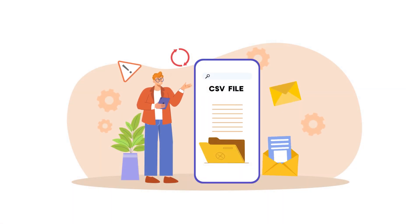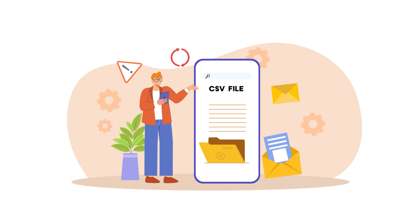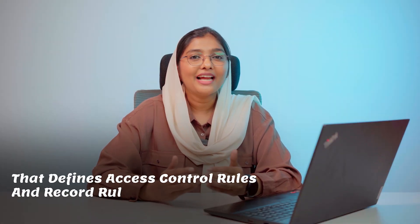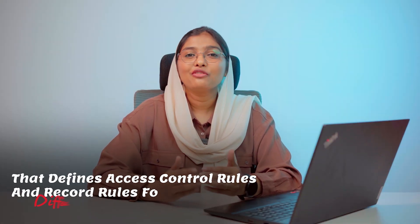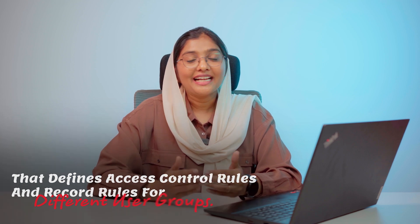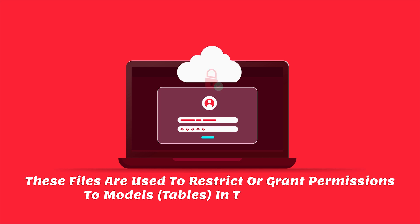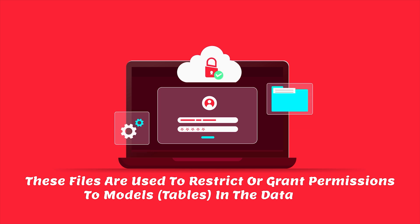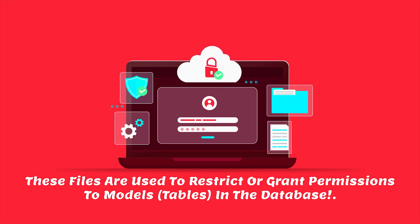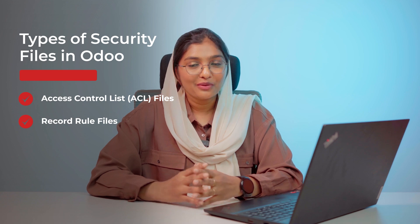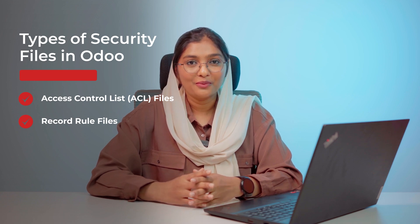In Odoo, a security file is typically a CSV file or XML file that defines the access control rules and record rules for different group users. This file is basically used for granting and restricting permissions for a model, that is the table created in a database. So there are different types of security files available in Odoo.